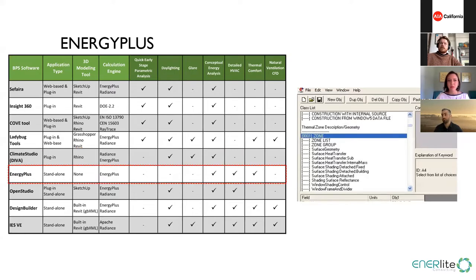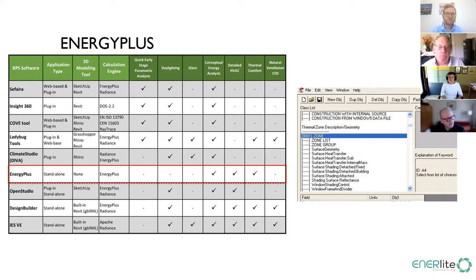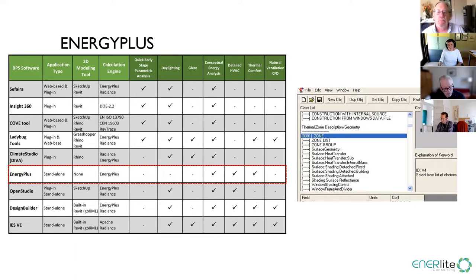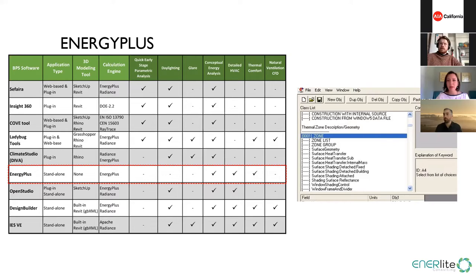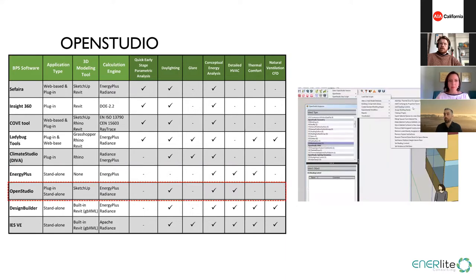Energy Plus is the Department of Energy's engine for energy modeling in buildings. It is a standalone tool that is not very user-friendly because it lacks a graphical user interface, making it hard to see the geometry. However, it has been widely adopted as the calculation engine in other applications — most of the other tools use Energy Plus as their main engine. OpenStudio is developed based on Energy Plus. It is an open source tool supported by DOE, available as both a SketchUp plug-in and a standalone tool for energy modeling. It also performs daylighting using Radiance.